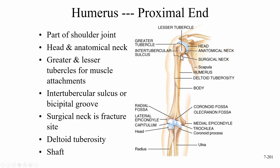The surgical neck is called that because it's the area most likely to fracture — statistically, if the humerus fractures, this is where it will happen. Further down the shaft we have the deltoid tuberosity, a roughened area for attachment of the deltoid muscle. To summarize: head, anatomical neck, greater tubercle, lesser tubercle, intertubercular sulcus (bicipital groove), surgical neck, and shaft.